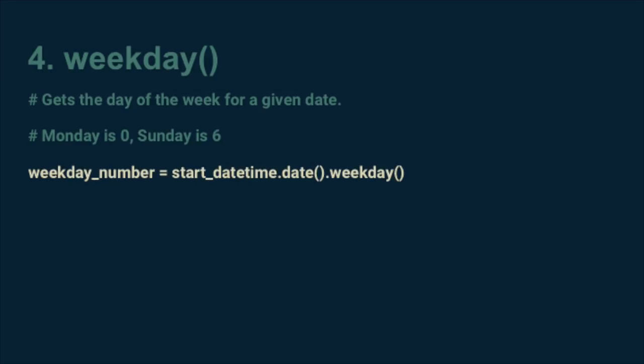Trick number four in our bag is the weekday function. For any given date, it calculates the day of the week. To use it, call the date function on your date time. This isolates the date object and ignores the time portion. And then call its weekday function. This returns a number from zero to six, where zero is Monday, one is Tuesday, et cetera, and six is Sunday. It handles all the quirks of keeping track of the days of the week, so you don't have to.